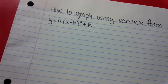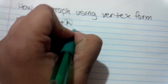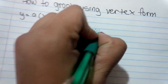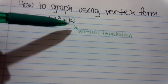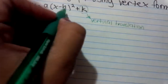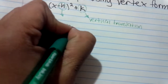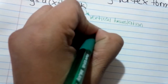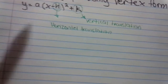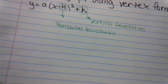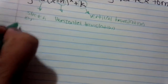This is the vertex form equation. It has different parts. K stands for vertical translation — this determines if the graph is going to be moving up or down. H is called the horizontal translation, which determines if the parabola is going to be moving right or left. And last but not least, a is the stretch or compression.